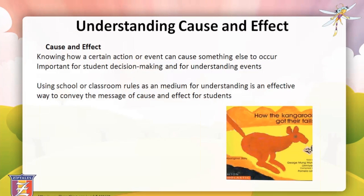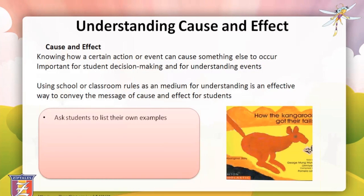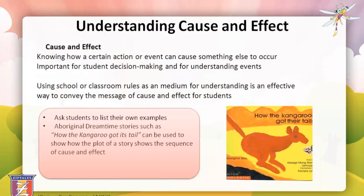We'll move now to recognising cause and effect. Recognising cause and effect means identifying how a certain action or event can cause something else to happen. It's an important skill because it helps students better understand why certain reactions or outcomes occur. Some suggested activities could be to discuss how cause and effect is all around us in our own lives. For example, you hurt your little brother — that's the cause — and you get punished — that's the reaction. You could also use school or classroom rules to determine the possible effects if a particular rule is broken.